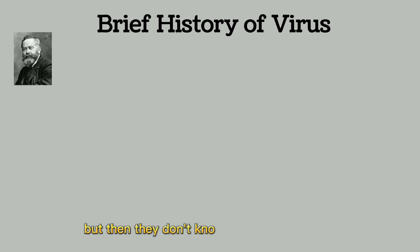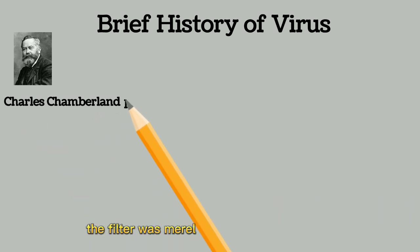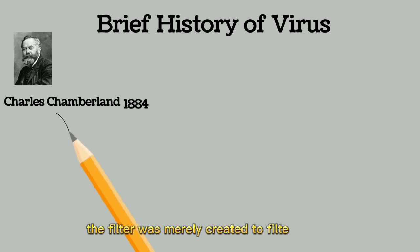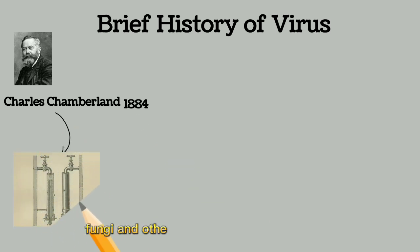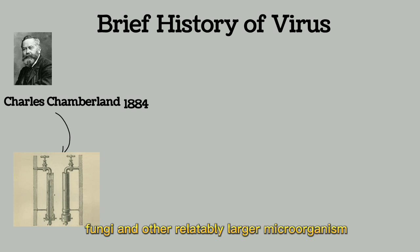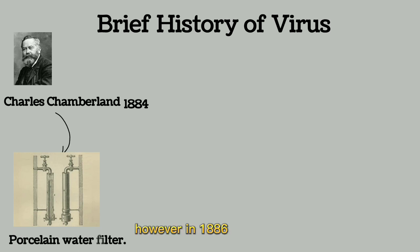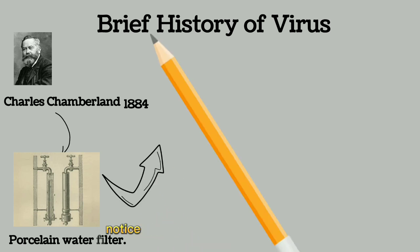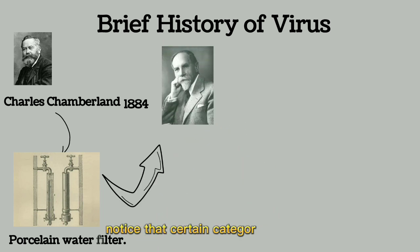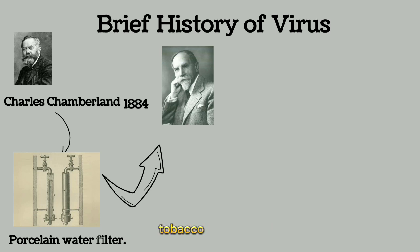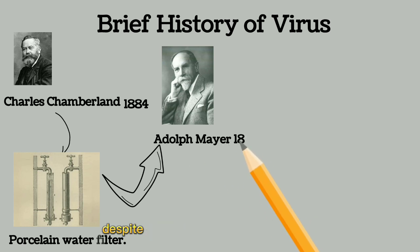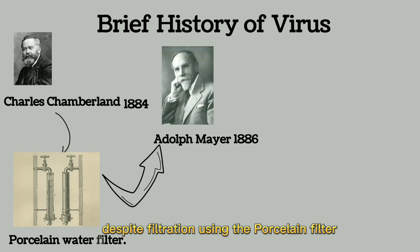At the time they didn't know anything about viruses. The filter was mainly created to filter bacteria, fungi, and other relatively larger microorganisms. Chamberland in 1884 invented that filter. However, in 1886, Albert Mayer noticed that a certain category of organism, which he did not know, was infecting the tobacco mosaic plant.